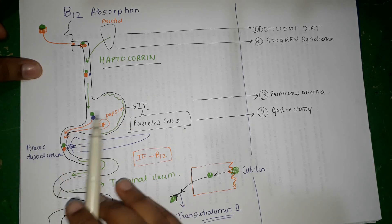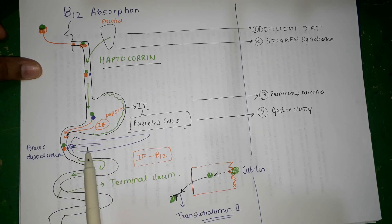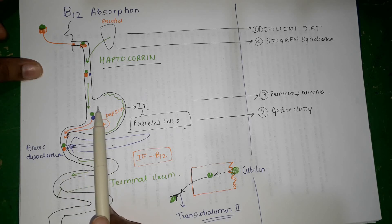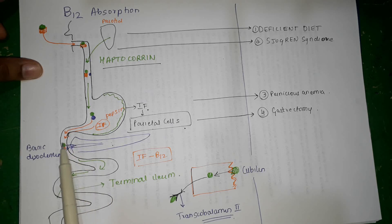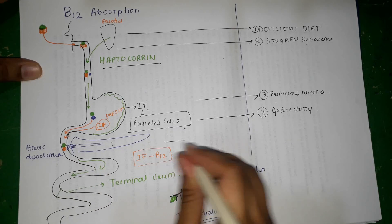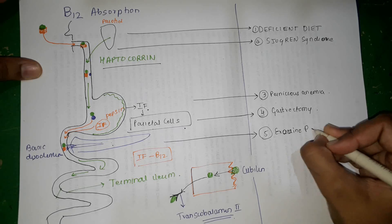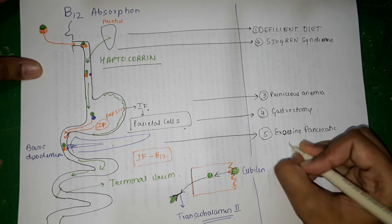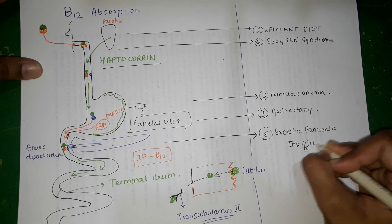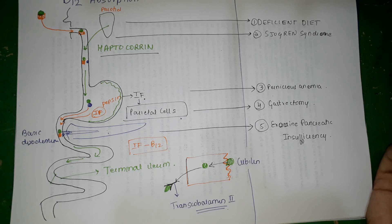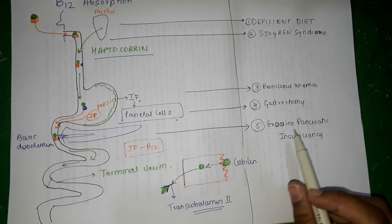Next, imagine if the stomach is normal and parietal cells are normal. The next important factor for B12 absorption is the secretions from the exocrine pancreas, because if there is no basic medium produced in the duodenum, vitamin B12 will not dissociate from haptocorin, and if it does not dissociate from haptocorin, it will not bind to intrinsic factor, and if it does not bind to intrinsic factor, there will be no absorption. So the next important cause is exocrine pancreatic insufficiency, which can occur in diseases like cystic fibrosis or even Sjögren's syndrome — any cause of exocrine pancreatic insufficiency will produce this picture.